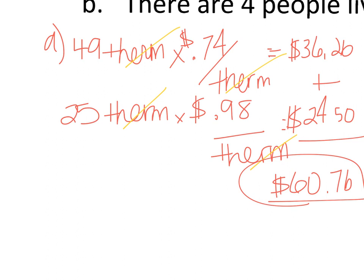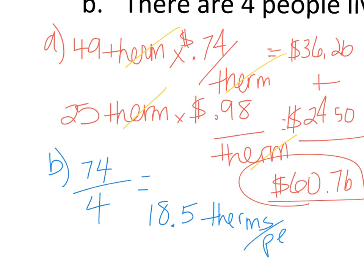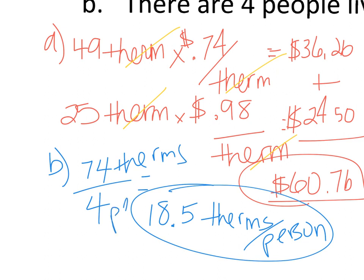And then the next one is just, hey, how many therms per capita? So we don't need the dollar amount at all. All we need to do is take 74 and divide that by four people in the household. So that's a really simple problem, and you end up with 18.5. Now, again, for an FRQ, make sure that you put your units in your problem and in your answer. So I would have 74 therms divided by four people, and I get 18.5 therms per person.